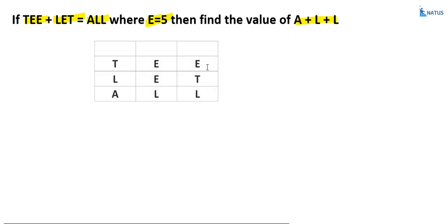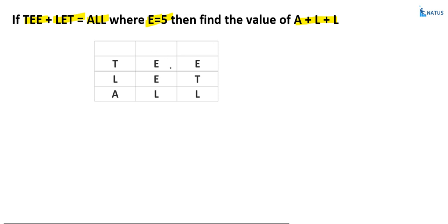Here, the sum of two numbers equals a third number, and all are three-digit numbers. These two numbers are three-digit numbers and the result is also a three-digit number, and t plus l is not more than 10. This is the first condition. Also, e is equal to 5, so substitute the value 5 in place of all e's.